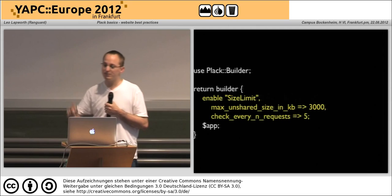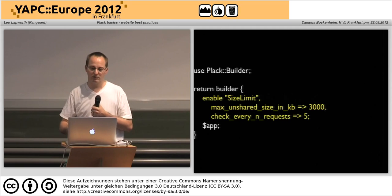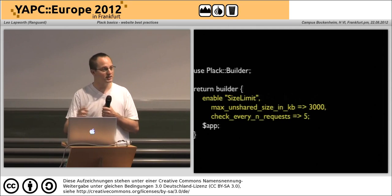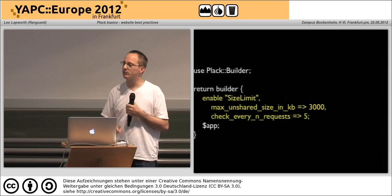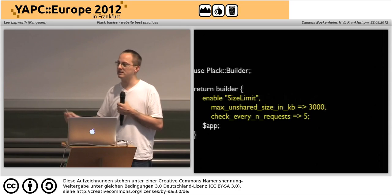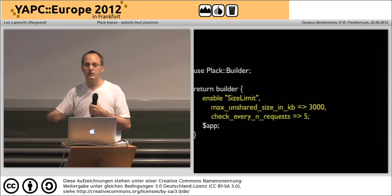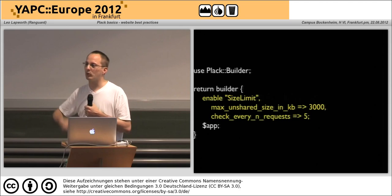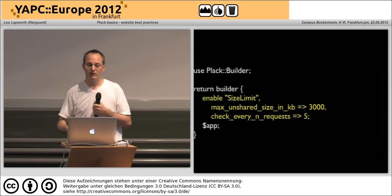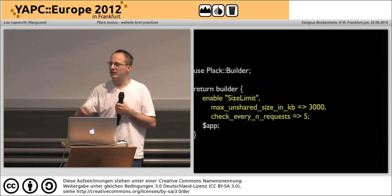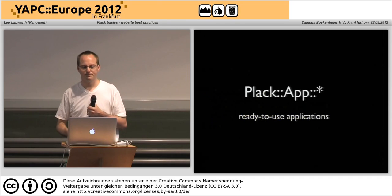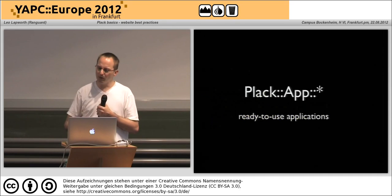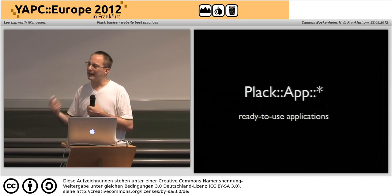There's also a similar one for size limit. No one ever writes code that leaks memory, but just in case — you can have this which says once a process hits a size limit, reap that process and spawn a new worker, and specify how often you want that to be checked.